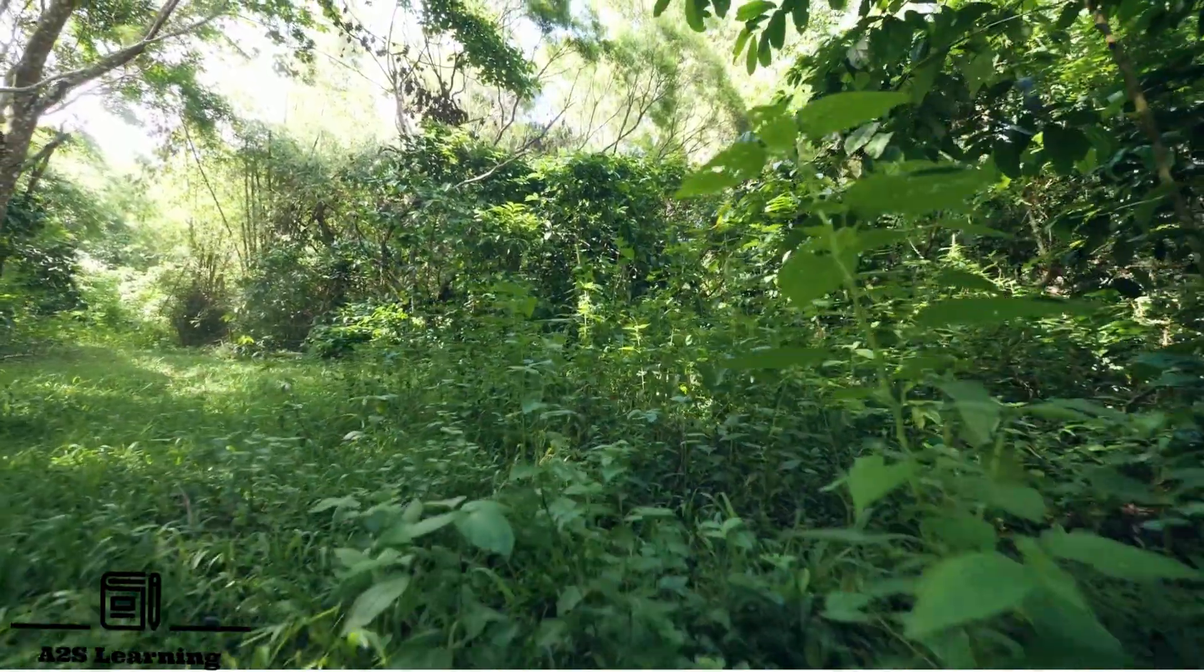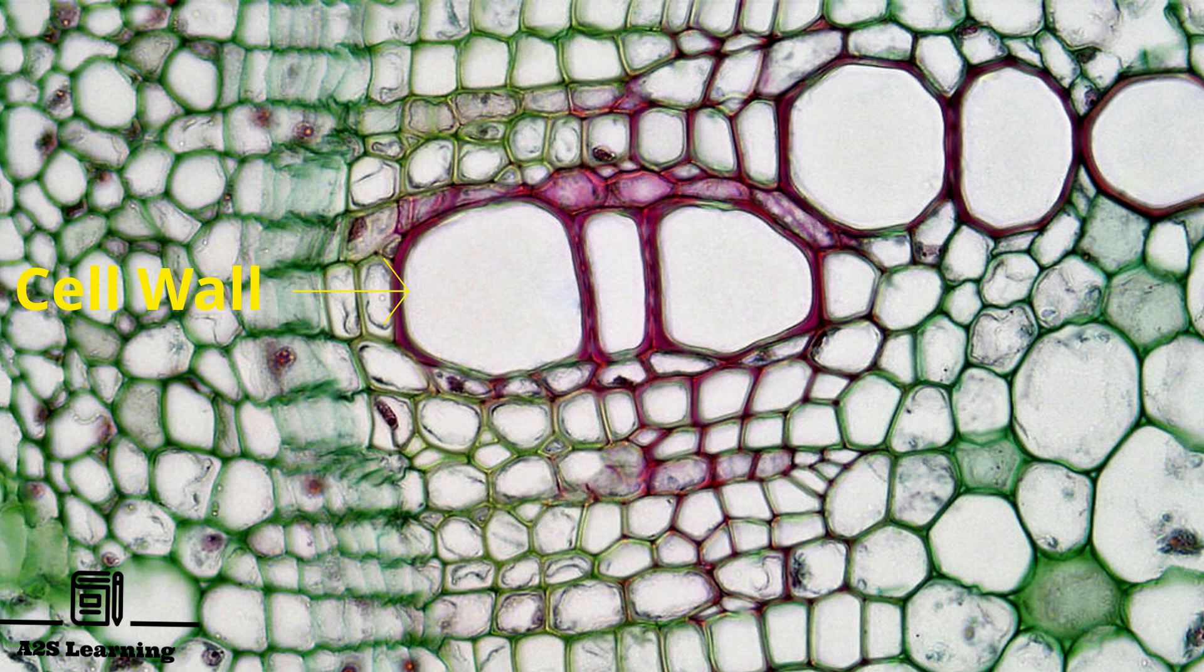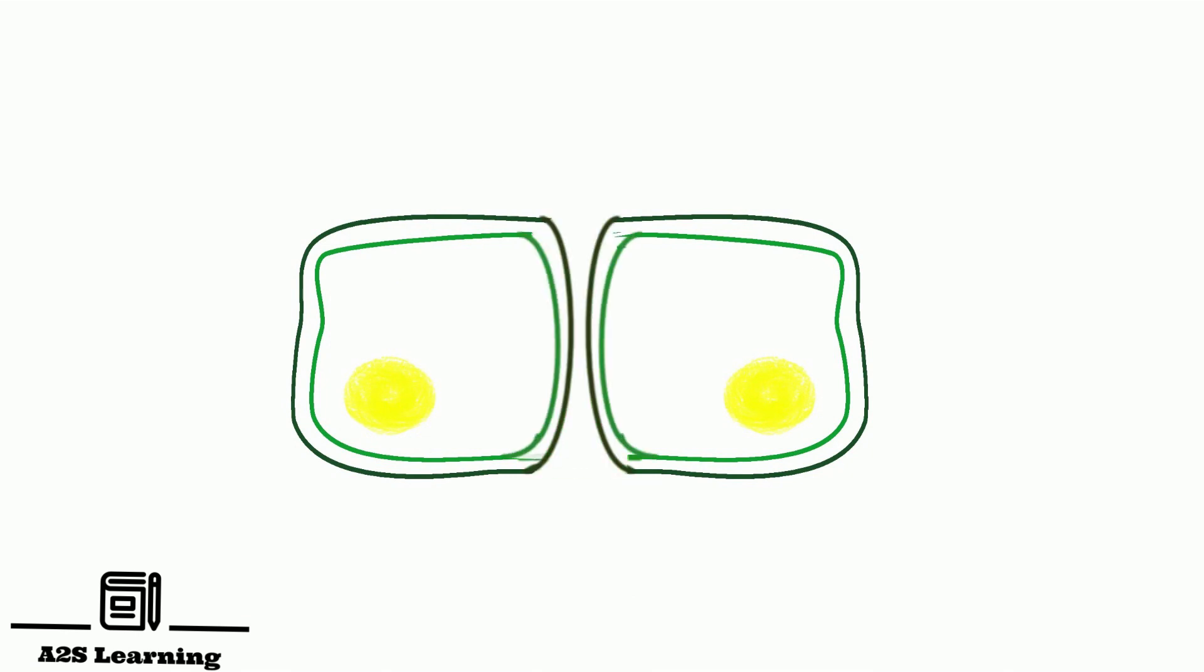However, plant cells are enclosed by a rigid cell wall. Therefore, they undergo cytokinesis by different mechanisms. In plant cells, cytokinesis begins in the center of the cell by formation of cell plate, which moves outwards and divides the cell into two.